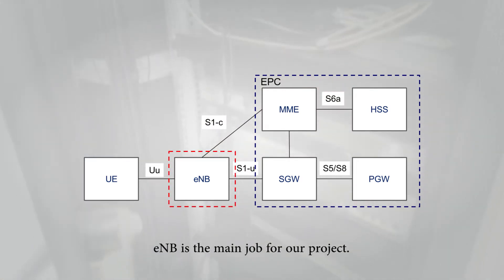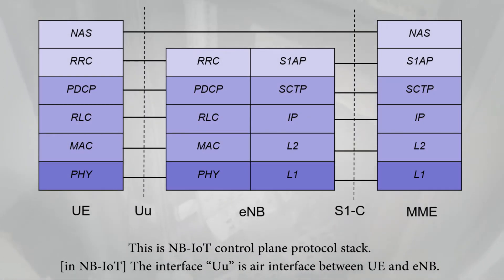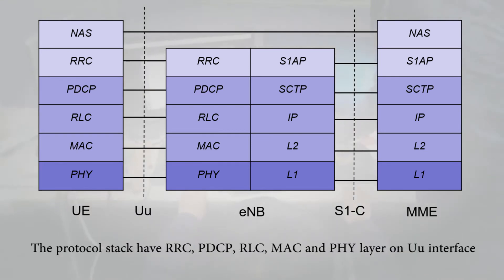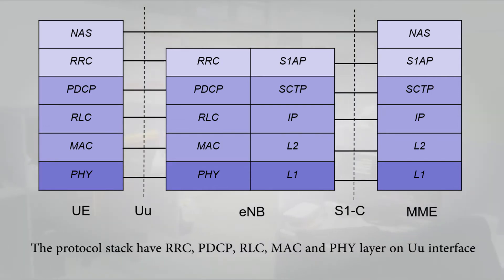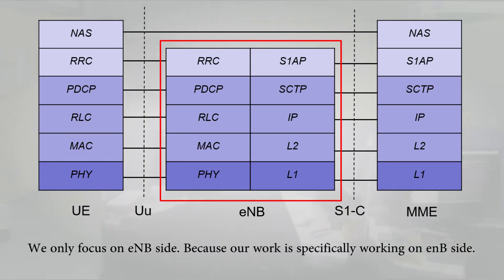eNodeB is the main focus of our project. This is the NB-IoT control plane protocol stack. The Uu interface is the air interface between the UE and eNodeB. We only focus on the eNodeB side because our work is specifically targeting the eNodeB.